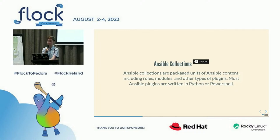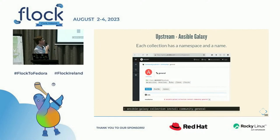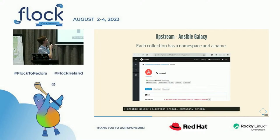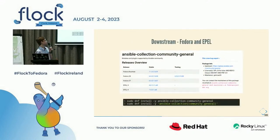How are Ansible collections packaged? Upstream, we have Ansible Galaxy. Each collection has a namespace and a name — there are reasons for this due to the way it used to be tied to GitHub repositories. This is a very popular collection, the community-general collection. It's on Galaxy, and you can use the ansible-galaxy collection install command to install it.